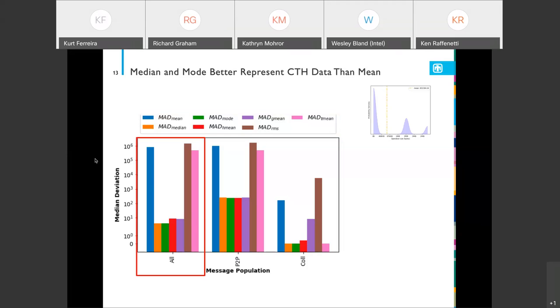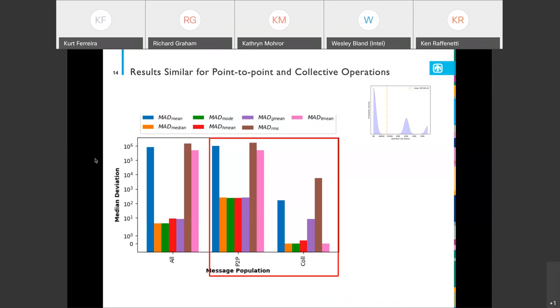I think a few things to note. First, looking at all of the messages, we see that the median and the mode have significantly lower values, lower MAD values. So this is saying that the median and the mode have a much better representation than the mean, that large blue line, for the message data for all messages. And if we look at point-to-points and collectives, we see the same thing: that the median and the mode have a better fitness and therefore appear to be a better metric for describing the underlying messages for CTH.